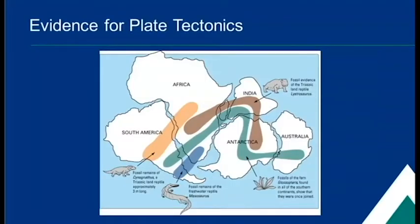Looking at specific fossils and specific types of rocks has also helped us to better understand how the continents changed position over time. They weren't always where we see them today on a map. We found similar fossils in rocks of the same type and age on different continents. For this to have happened, it means that at some point in the past, these two continents must have been beside each other. Also, look at how the coasts of Africa and South America line up — that is because they were once together and then they broke apart.